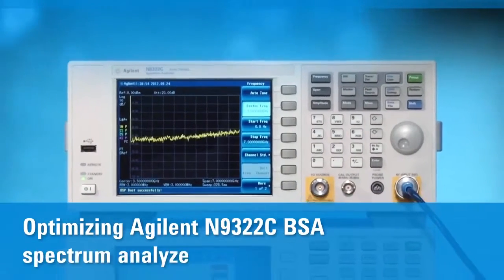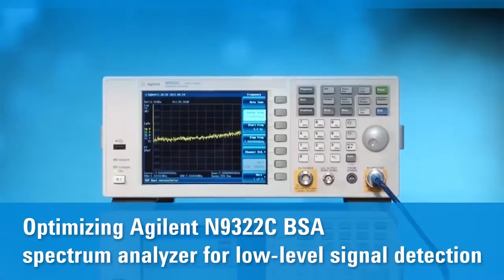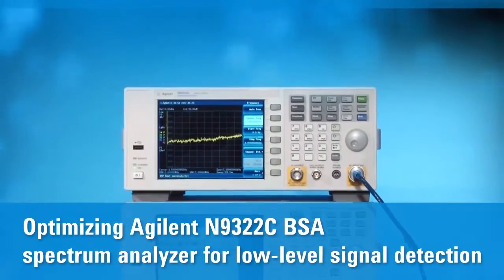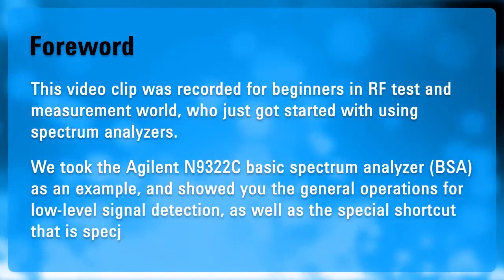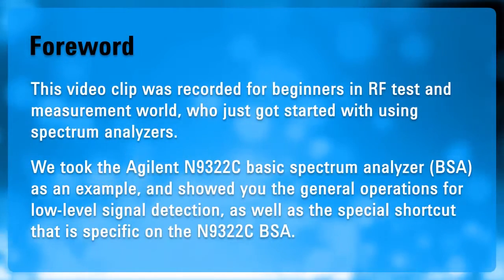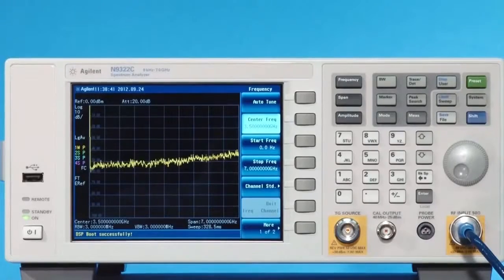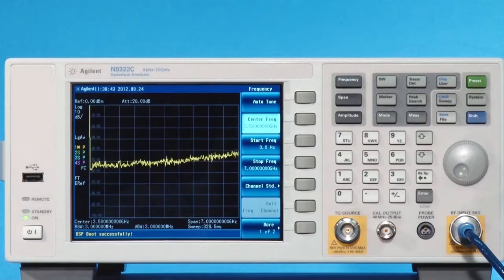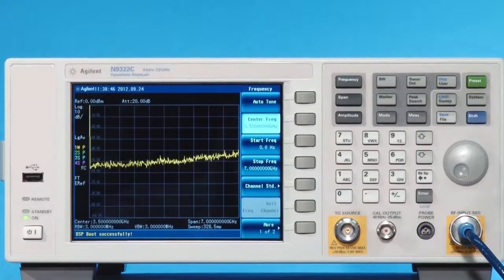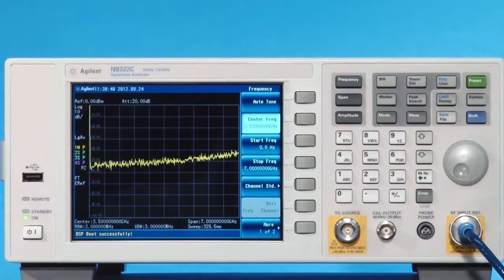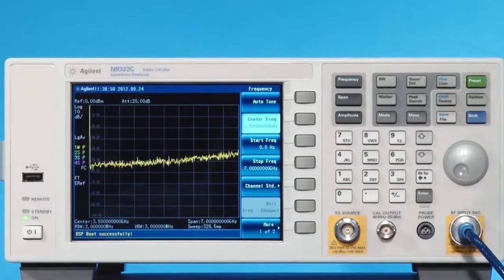Optimizing Agilent N9322C BSA Spectrum Analyzer for Low-Level Signal Detection. A spectrum analyzer's ability to measure low-level signals is limited by the noise generated inside the analyzer. Typically, three adjustments are made to lower the analyzer's displayed average noise level.